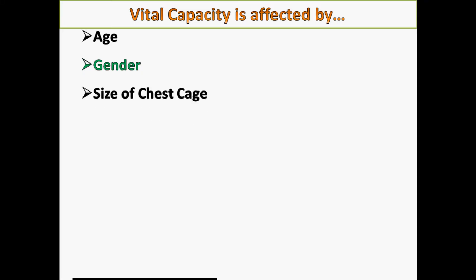And the size of the chest cage. If you have a bigger rib cage, then you're likely to store more air. Your physical fitness level can actually increase your vital capacity. Your posture is another one. Your race.